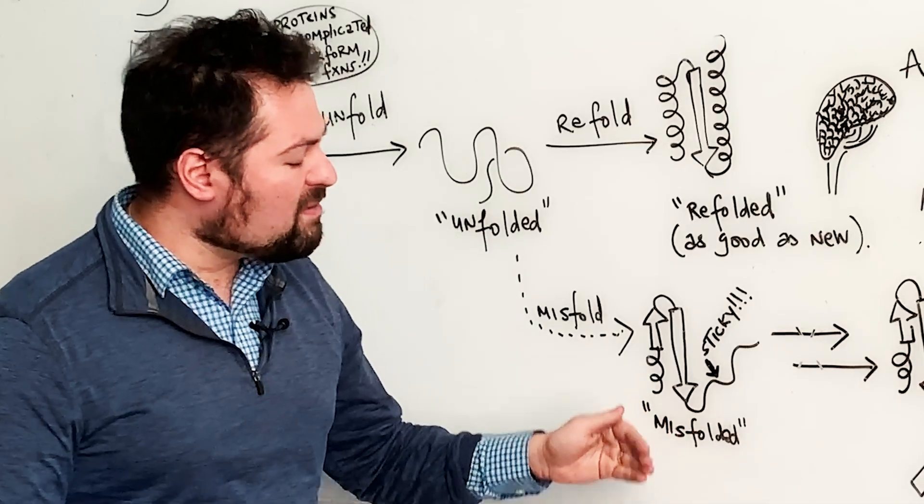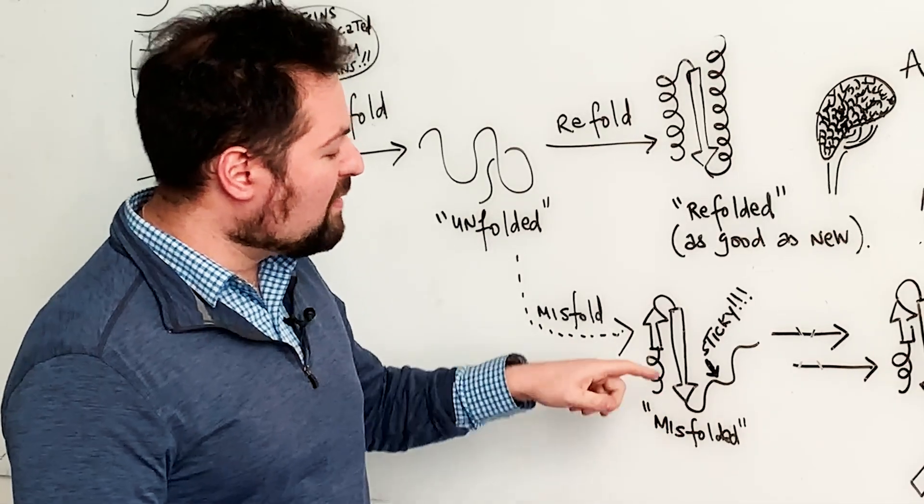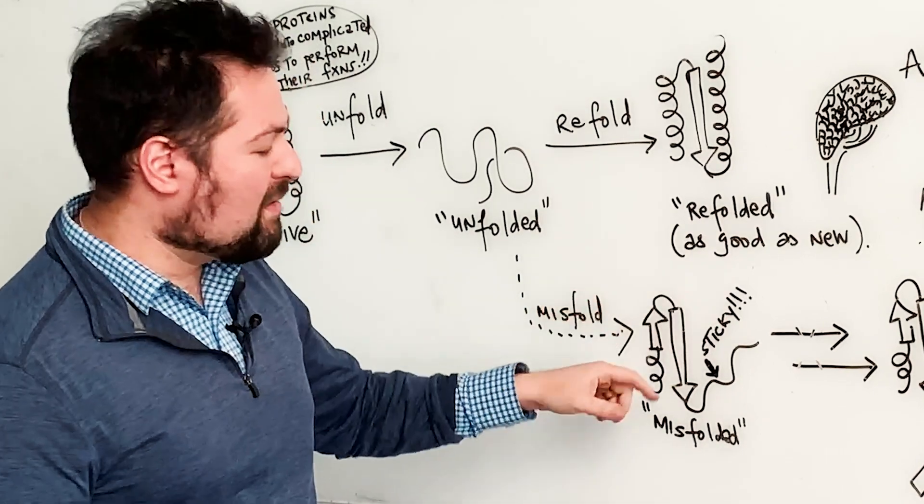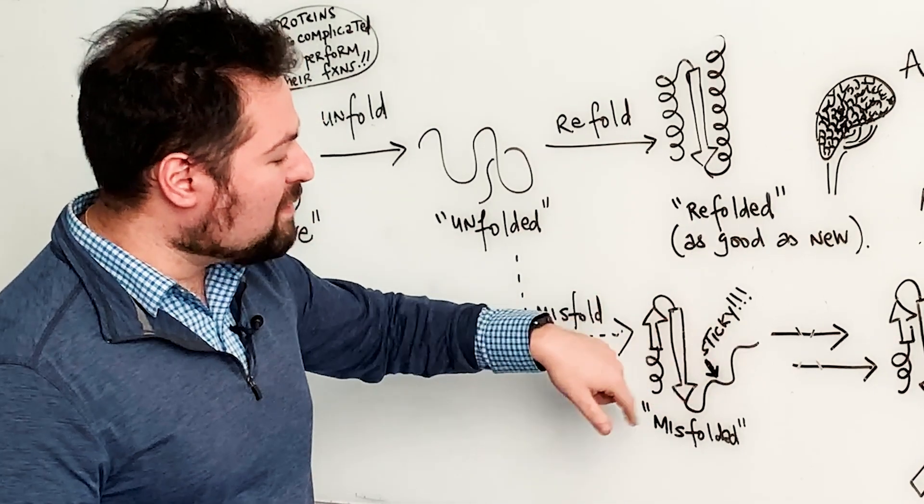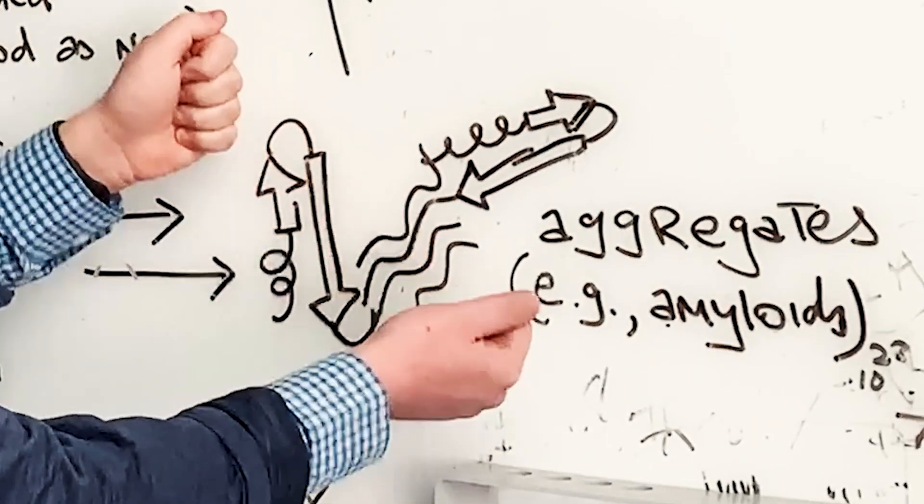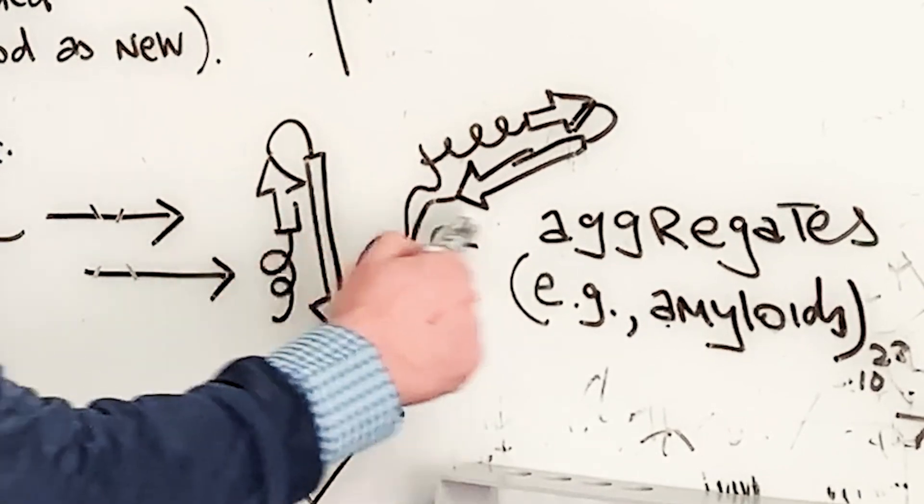And the reason why these misfolded states are so problematic is because oftentimes the protein doesn't completely fold back on itself, and it leaves these little ends that are sticky. And these sticky ends can cause lots of proteins to come together, ultimately forming these aggregates.